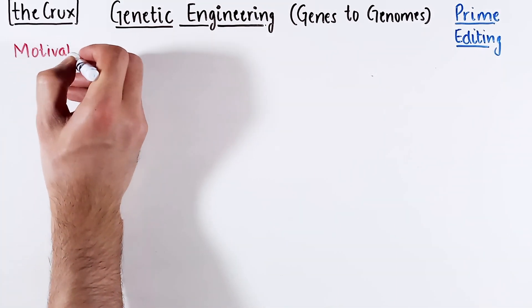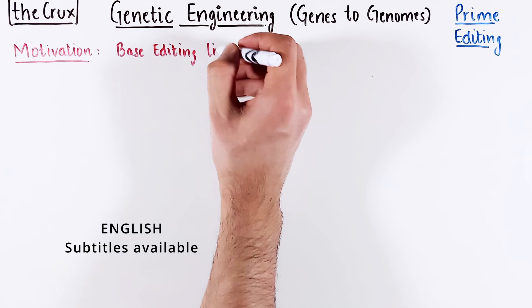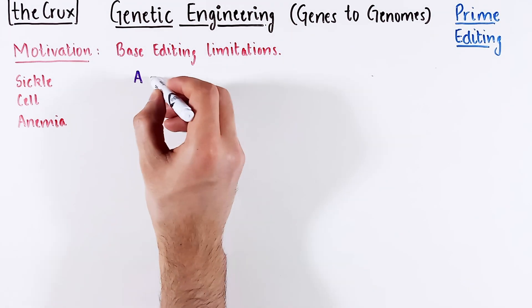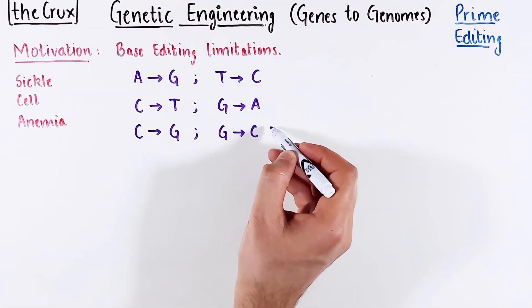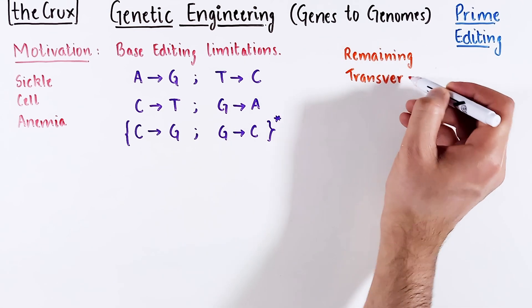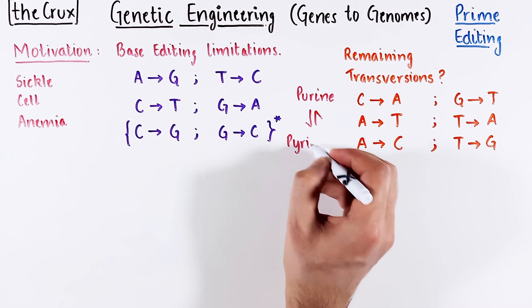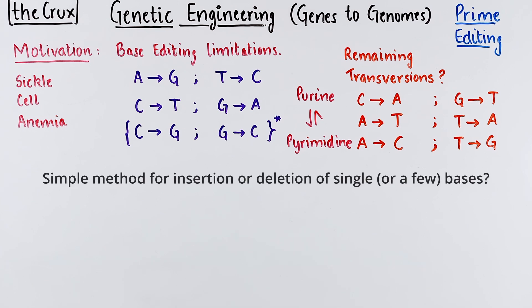The origin of prime editing was motivated by the fundamental limitation of base editing. As discussed using the sickle cell anemia example in the base editing video, base editing is limited to four transitions and maybe one transversion. This means the remaining transversions cannot be addressed through base editing. More specifically, an interchange between purines and pyrimidines is not possible, and there is also no simple method for creating single base deletions or insertions.